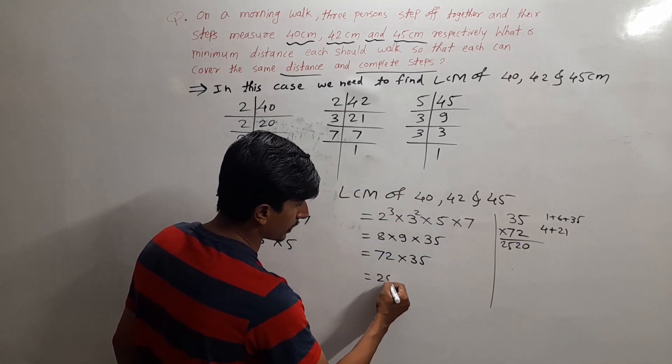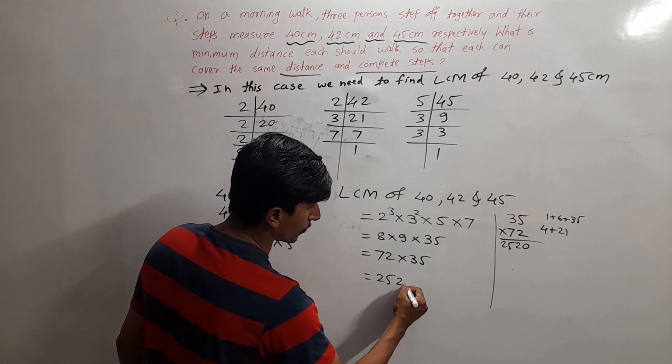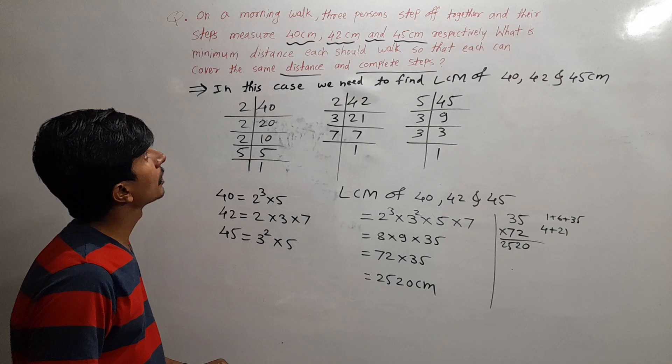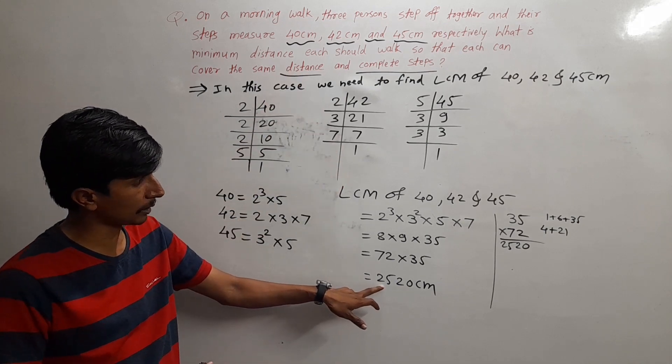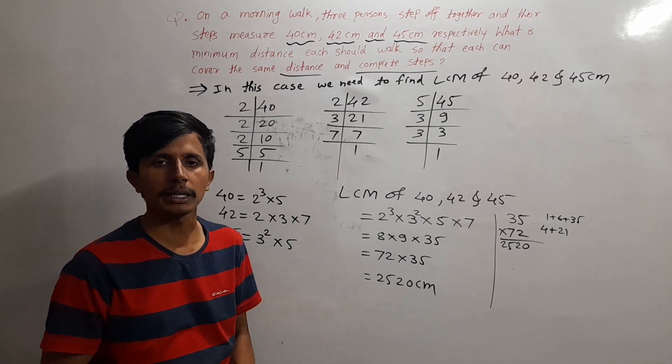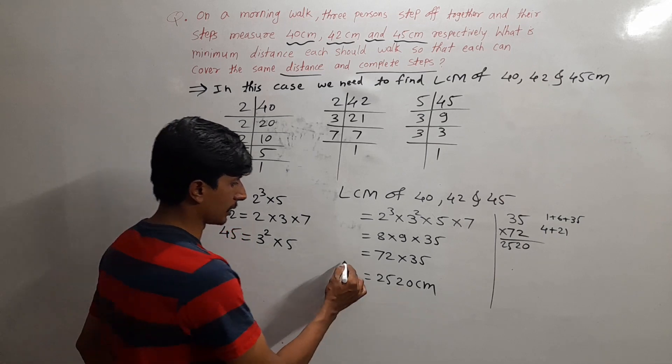So they need to complete a distance of 2520 centimeters. All these three persons have to walk a distance of 2520 centimeters. This is your final answer.